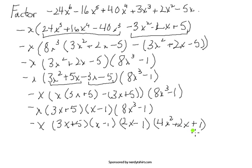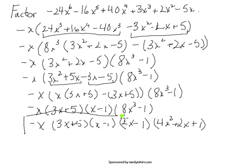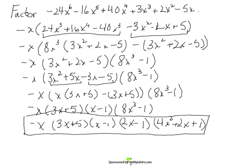That completes the difference of cubes factorization. Looking over what we've done: the factor 2x minus 1, like x minus 1 and 3x plus 5, is a linear factor — done. And this trinomial came out of a difference of cubes factorization, and any trinomial that comes out of a sum or difference of cubes is never itself factorable over the real numbers. So there it is — the entire problem is now boiled down to a fully factored form, with none of the factors being any further factorable. There's your fully factored final result.